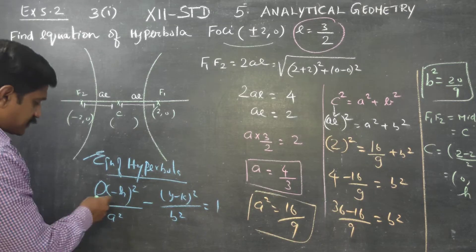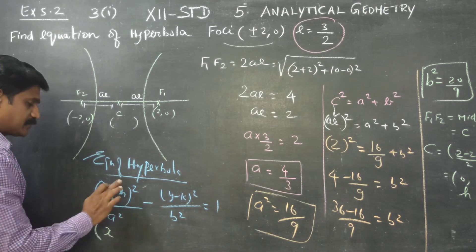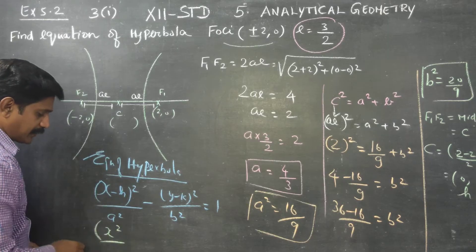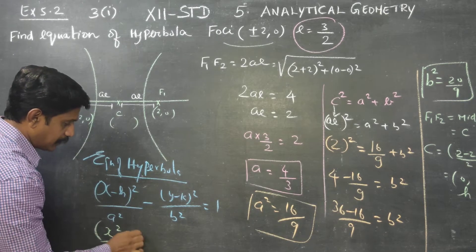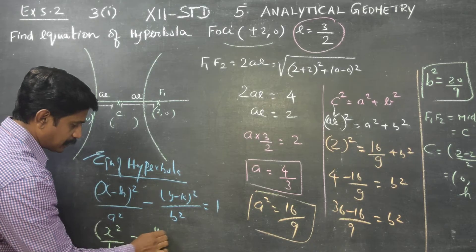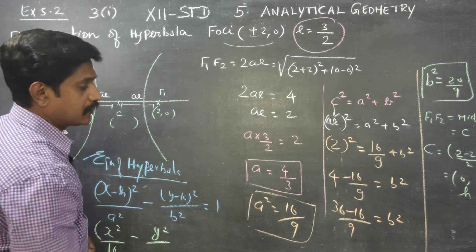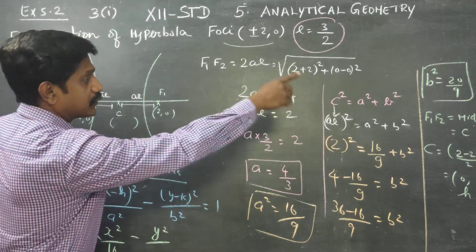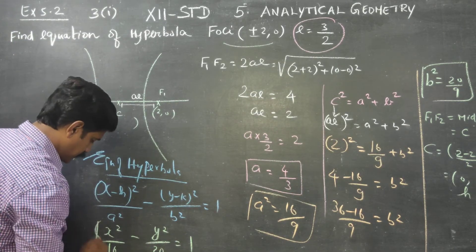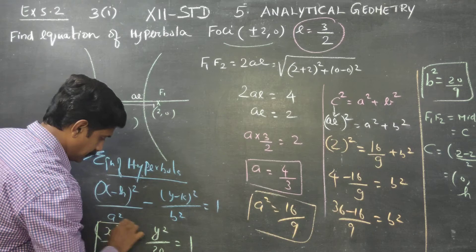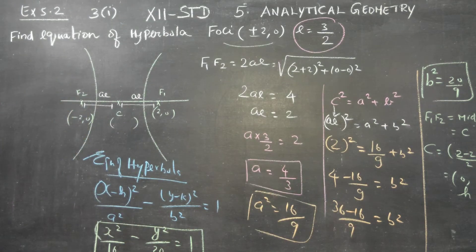Substituting into the standard equation of a hyperbola: x minus h squared by a squared minus y minus k squared by b squared equals 1. With h equals 0, k equals 0, a squared equals 16 by 9, and b squared equals 20 by 9, the equation becomes x squared by 16 by 9 minus y squared by 20 by 9 equals 1.